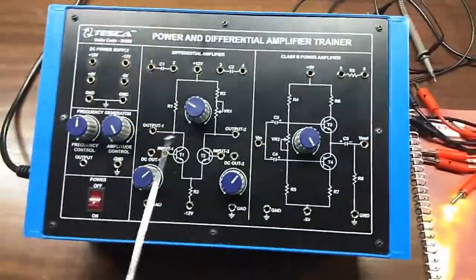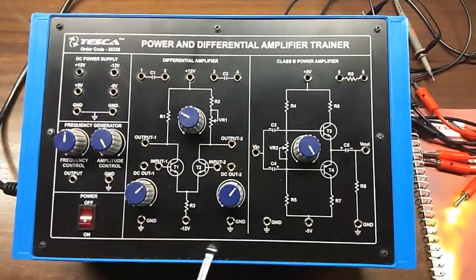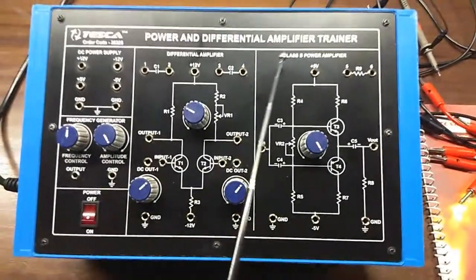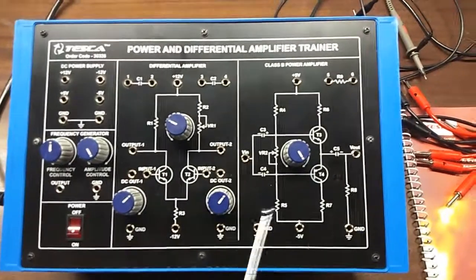This is the trainer kit and these are the mimic diagrams given here on the trainer. This is the differential amplifier part and this is the class B power amplifier part.